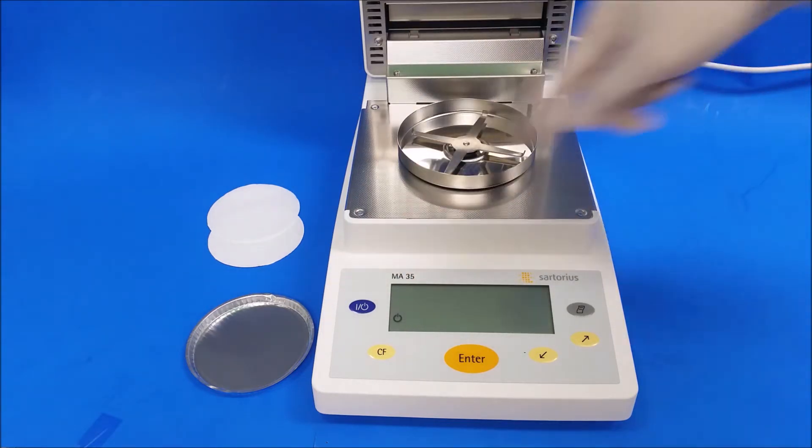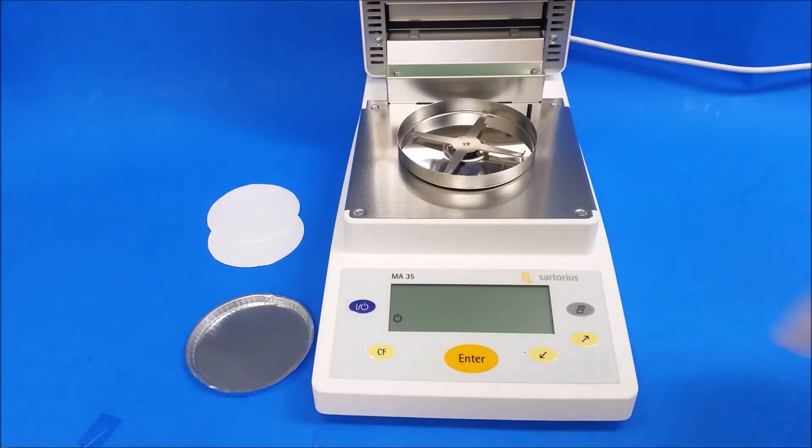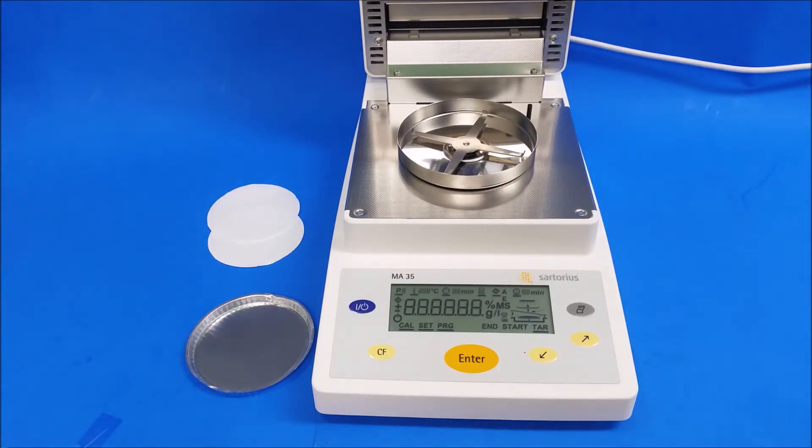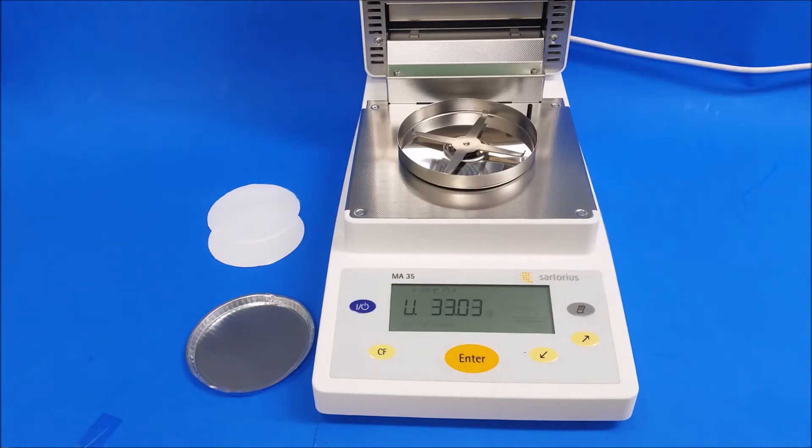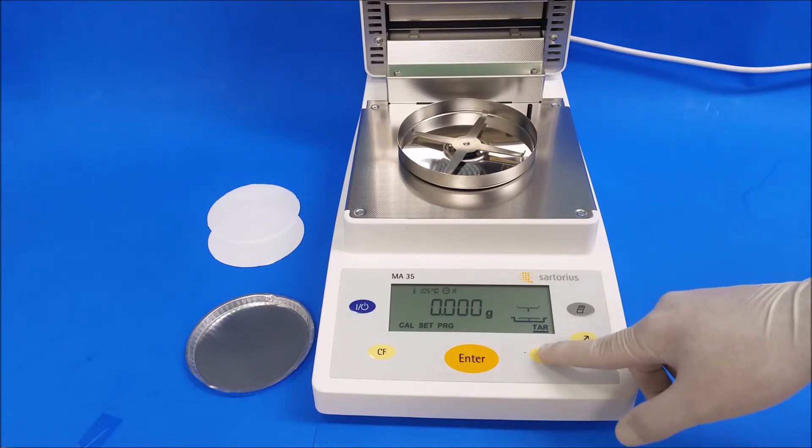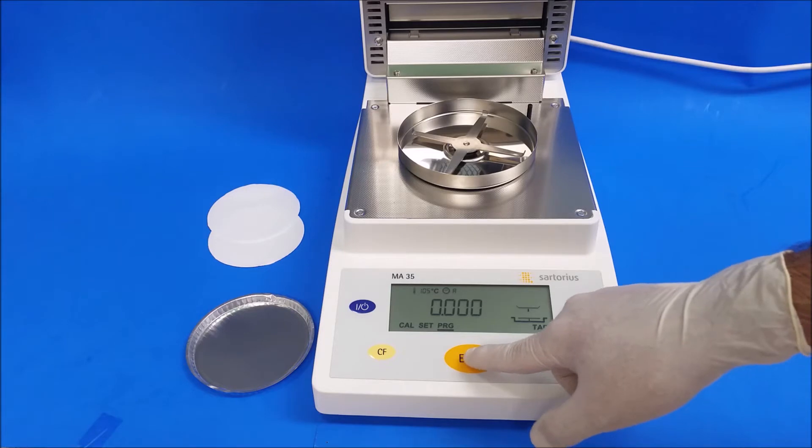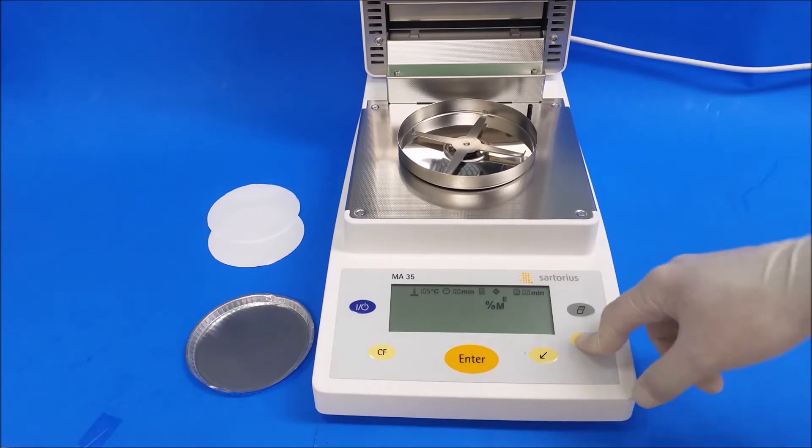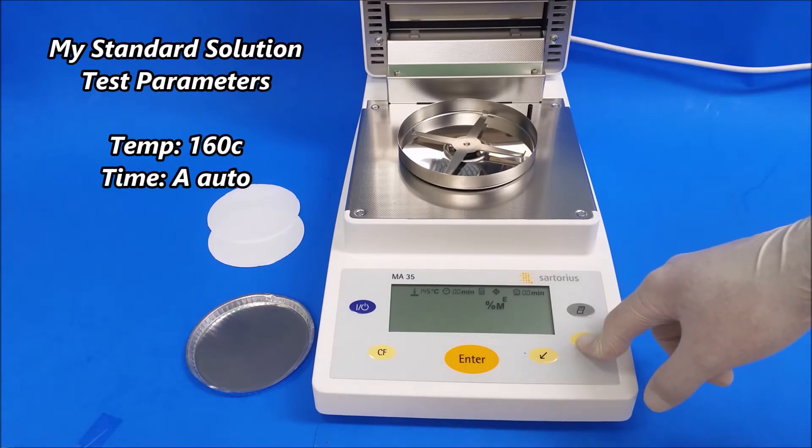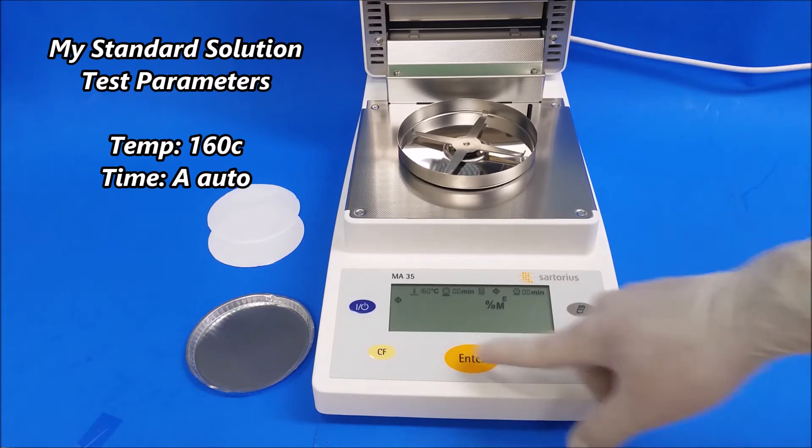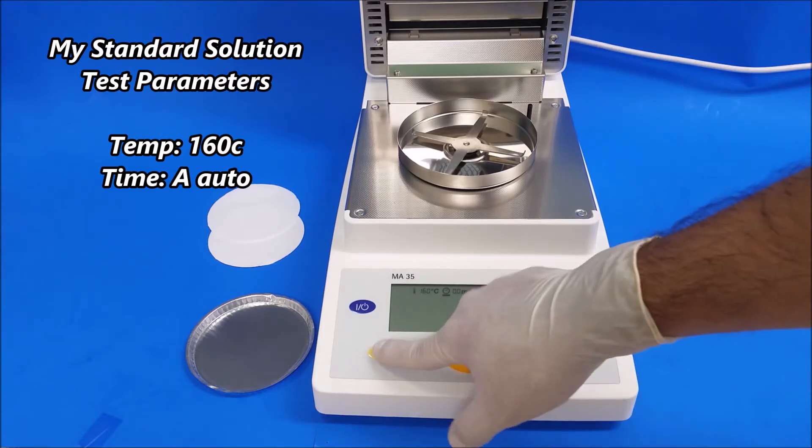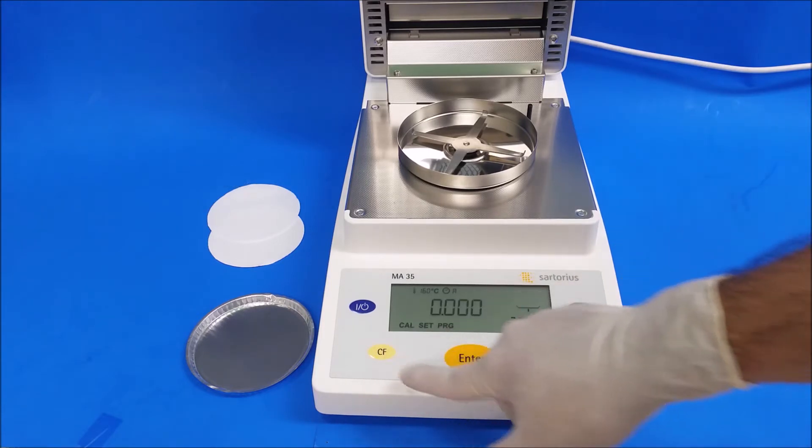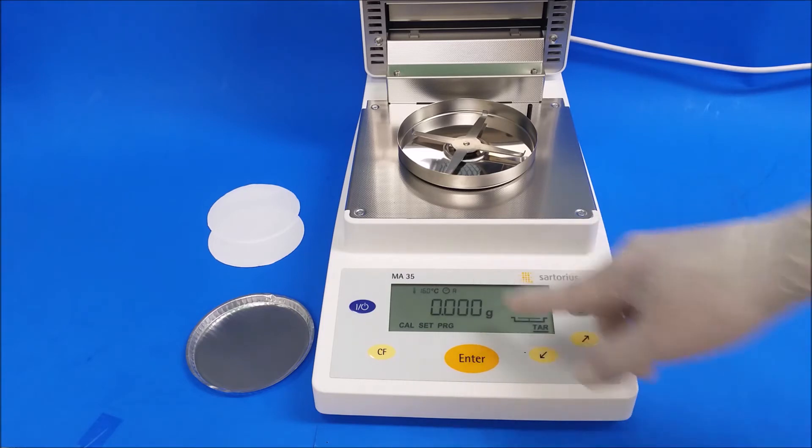You go to program, then enter. I already have it at 160 and it's already on auto. You've got to make sure when you're going to tare, you have to be underlining tare.